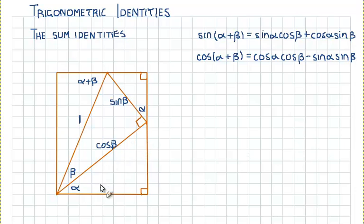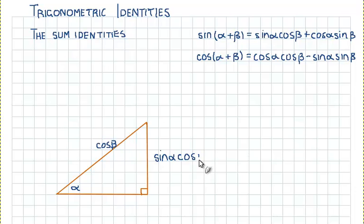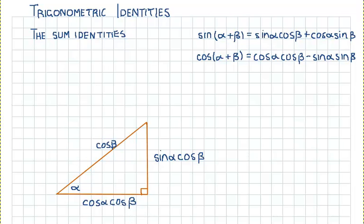Now we are going to look at this bottom triangle in more detail. If you have angle alpha and you know the length of the hypotenuse, the opposite side is sin α times the length of the hypotenuse, which is cos β. And the length of the adjacent side is cos α times the hypotenuse, so cos α times cos β.